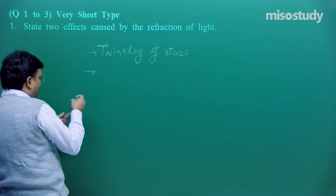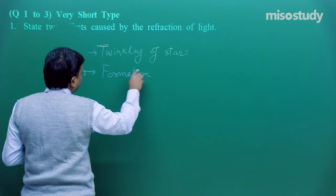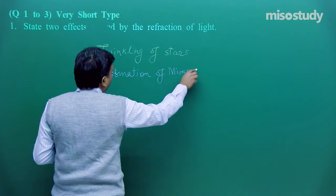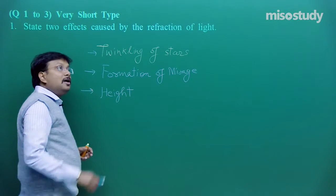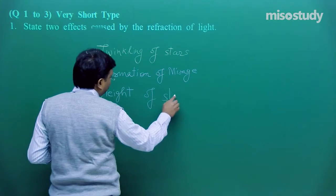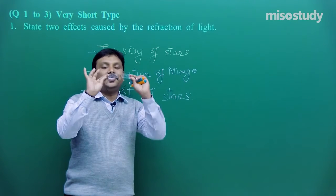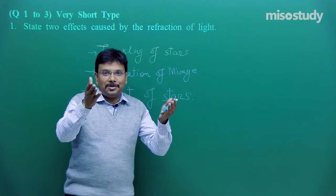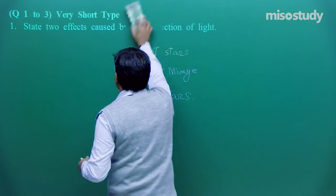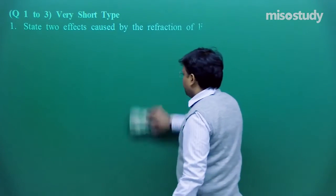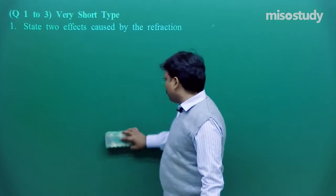Twinkle twinkle little star, that is twinkling of stars. Formation of mirage, that is again atmospheric refraction, formation of mirage between deserts, or height of stars. Actually, you will find the height of a star slightly more than its actual height. And there are so many applications of refraction. If you try to recall, I started this topic discussion using a pencil and a glass full of water.